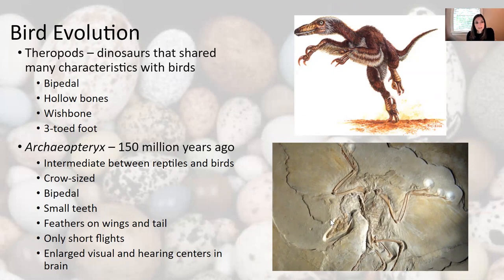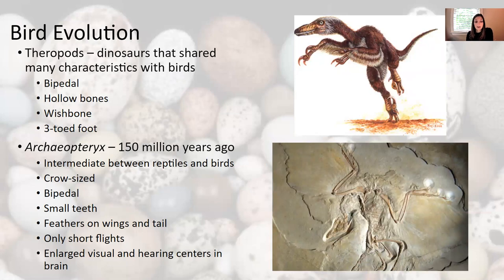The Archaeopteryx, whose fossils date back to about 150 million years ago, is thought to be an intermediate between reptiles and birds. Archaeopteryx is a genus. They were crow-sized and bipedal, had small teeth, and had feathers on their wings and tail — not on their whole body, but on parts of it. They took only short flights. They did have enlarged visual and hearing centers in the brain, sharing some characteristics with birds while also sharing some with reptiles.